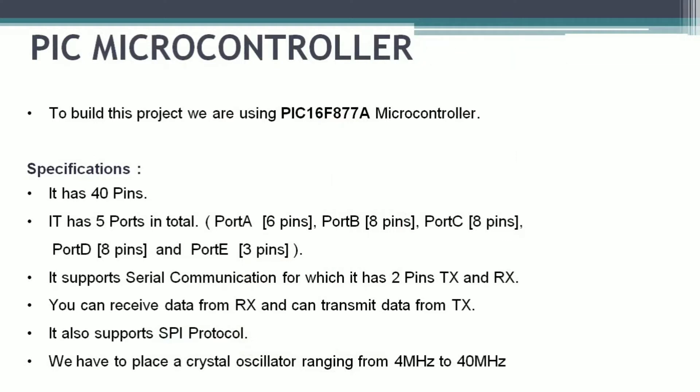Now we see which microcontroller we are using to build this project. We are using the PIC16F877A microcontroller. It has 40 pins and five ports named Port A, Port B, Port C, Port D, and Port E. Port A has six pins, Port B has eight pins, Port C has eight pins, Port D has eight pins, and Port E has three pins. It supports serial communication with transmitter and receiver pins, supports the SPI protocol, and uses a crystal oscillator ranging from 4 MHz to 40 MHz — here we are using approximately 20 MHz.